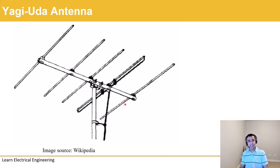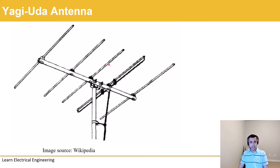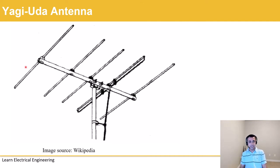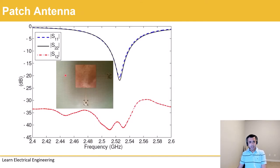Another antenna that was much more common in the 80s, 90s and early 2000s was the Yagi-Uda antenna, generally used for capturing TV signals. It has a dipole antenna and a bunch of reflectors and directors. The reason it has more than one element and several reflectors and directors is to enhance the antenna gain, which is a separate topic we will cover in a future video.